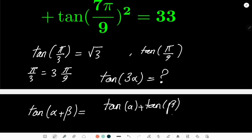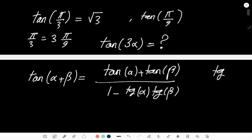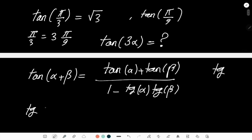...divided by 1 - tan(α)·tan(β). I'll write tangent as 'tg' for convenience. From this, tan(2α) — just put β = α — gives 2·tan(α) divided by 1 - tan²(α).